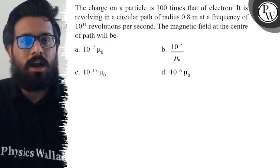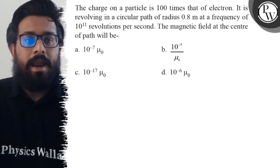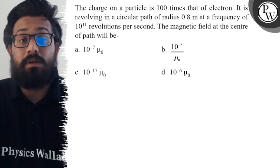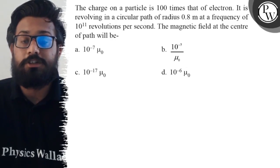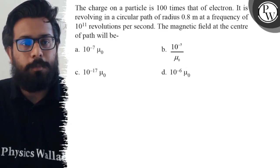Hello, let's see the question. The charge on a particle is 100 times that of electron. It is revolving in a circular path of radius 0.8 meter at a frequency of 10^11 revolutions per second. The magnetic field at the center of the path will be: first option is 10^-7 μ₀.